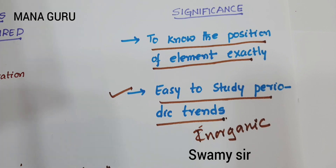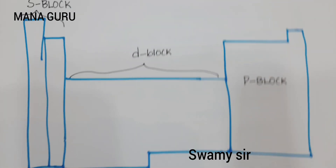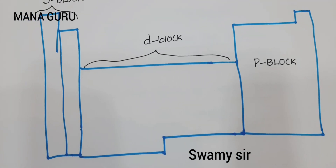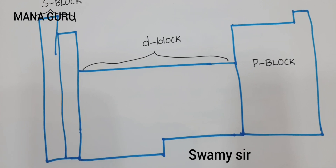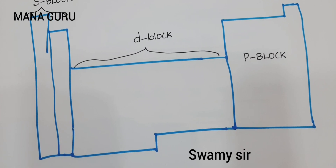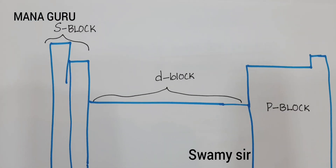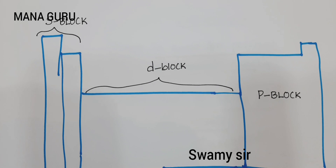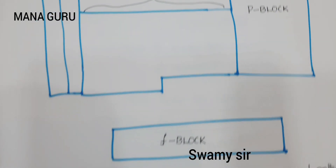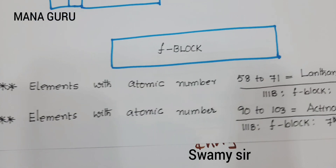Before entering into the tricks, take a small look at the outline of the periodic table. In the periodic table, we have four blocks: S block, D block, P block, and F block.